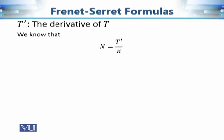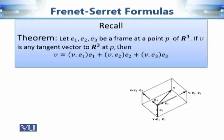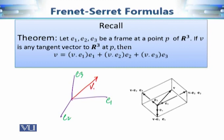Now let's see how to prove these formulas. We know the principal normal vector field is defined as N = T' / κ, which immediately gives us T' = κN. To express B' in terms of T, N, B, we use the result from linear algebra: if e1, e2, e3 form an orthonormal frame, then any vector v can be written as v = (v·e1)e1 + (v·e2)e2 + (v·e3)e3.